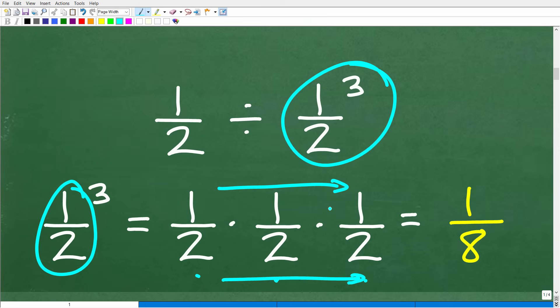we simply multiply the respective numerators times the respective denominators. So, 1 times 1 is 1. 2 times 2 times 2, of course, is 8. So, 1 half cubed is equal to 1 eighth.